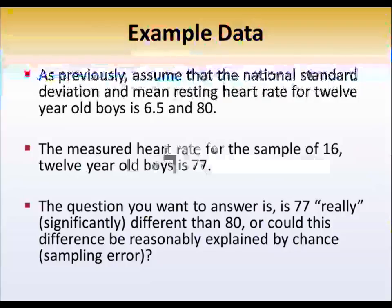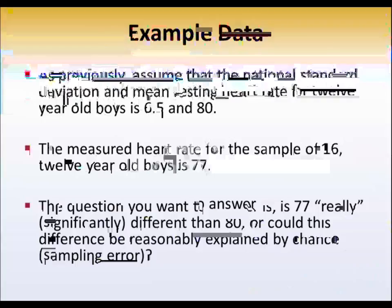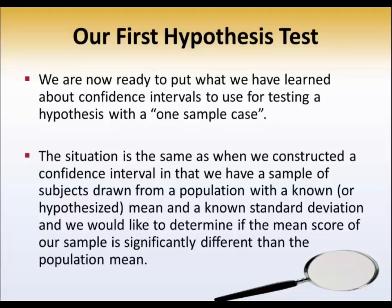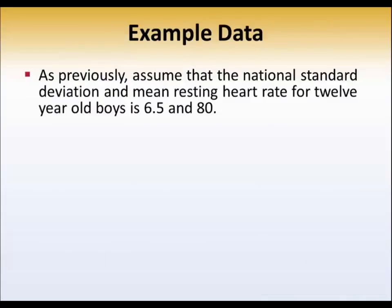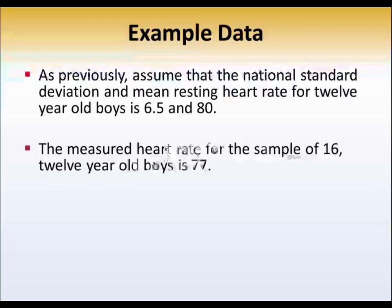Here are our hypotheses. The null hypothesis is that the sample mean is equal to the population mean. That's to say there's no difference between 77 and 80. Our alternative hypothesis is that the sample mean of 77 is different, significantly different, from the population mean of 80.